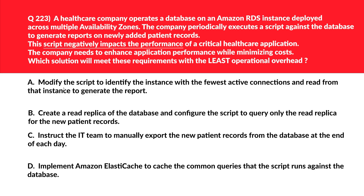Next question. Option A says modify the script to identify the instance with the fewest active connections and read from that instance to generate the report. This approach adds complexity and does not guarantee consistent performance improvement — instantly incorrect.